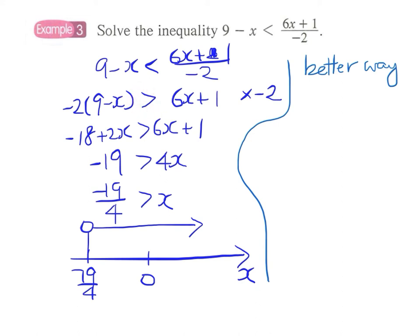And again we have this: 9 minus x less than 6x plus 1 over minus 2. In fact, to remove the denominator we can simply multiply both sides by positive 2. So since this is a positive number...